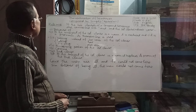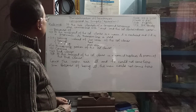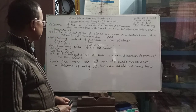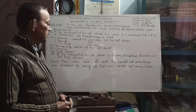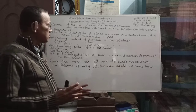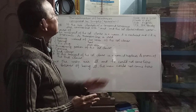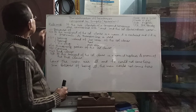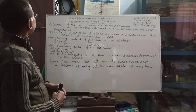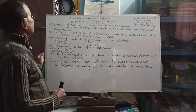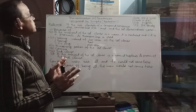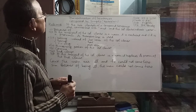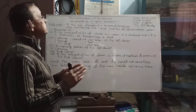Rule number 8. If the two clauses of a compound sentence are connected with 'and', and if the first clause indicates a cause, then we have to follow this rule. First of all, we have to use 'because of'. Then, if the first clause subject is a noun, it is excluded.